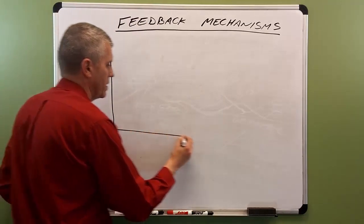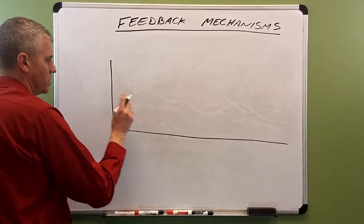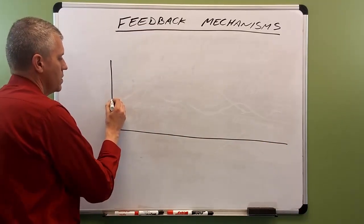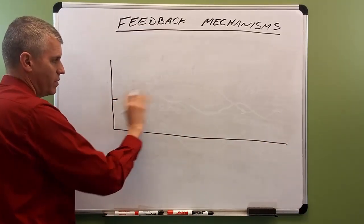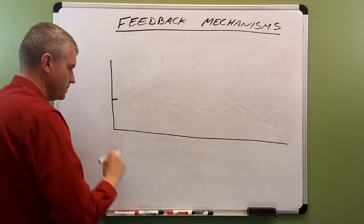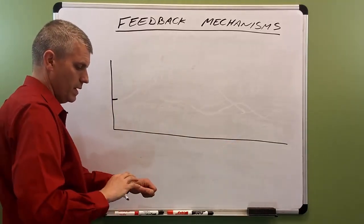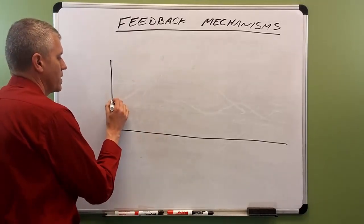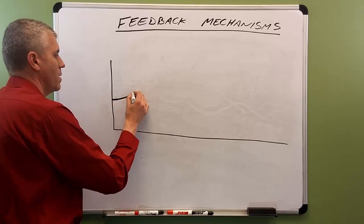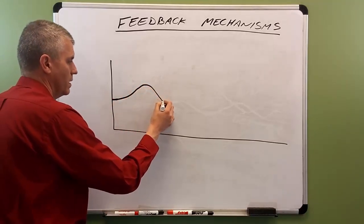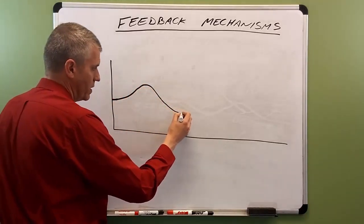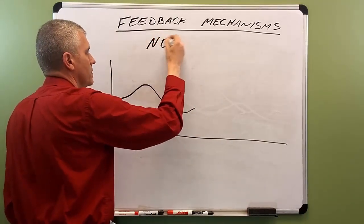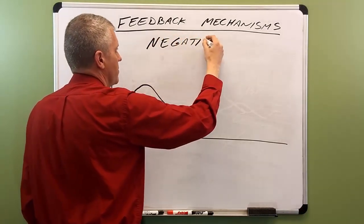I'm going to use the graph again, partly to describe it — this will also be useful later. You can imagine some level inside of the human body being graphed here over time. This could be blood sugar, blood pressure, oxygen levels, electrolyte levels, whatever it is. This factor, if we observe it over time, it might go up, but if it does, it's going to come back down again. And it might go down, but if it does, it's going to come back up again. And the mechanism that's making this happen is called negative feedback.